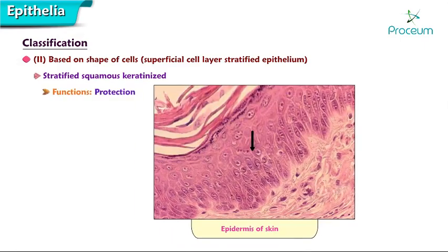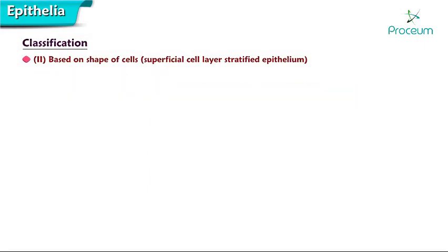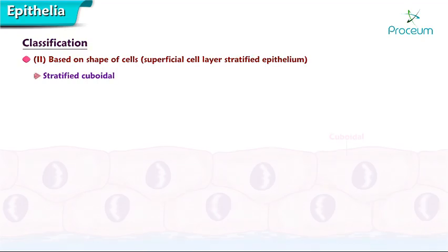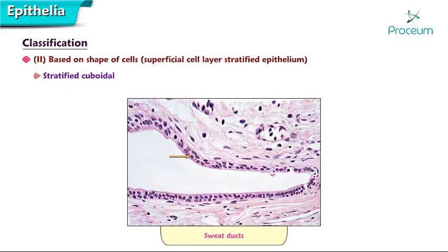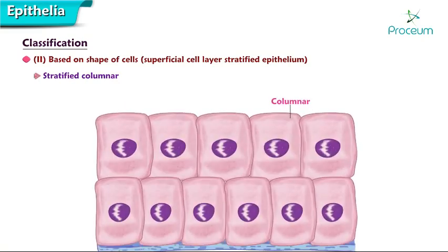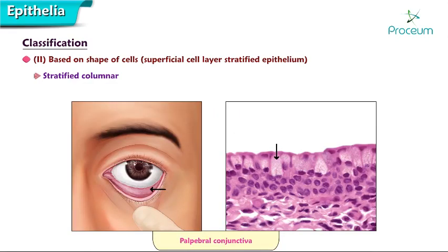Stratified cuboidal epithelium is present in two or three layers and the superficial cell layer is cuboidal. Occurrence is in the sweat ducts; function is protection. Stratified columnar epithelium is also present in two or three layers and the superficial cell layer is columnar. Occurrence is in the palpable conjunctiva; function is protection.